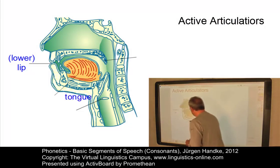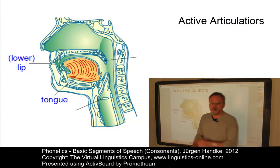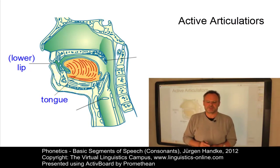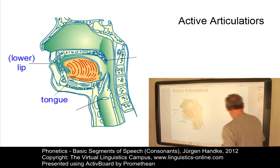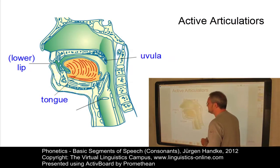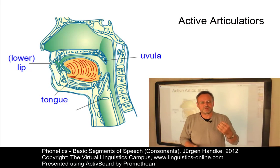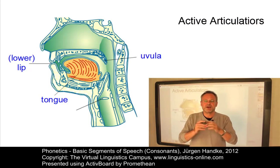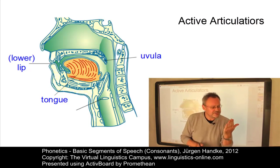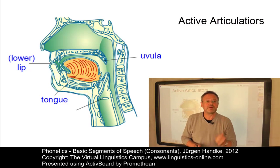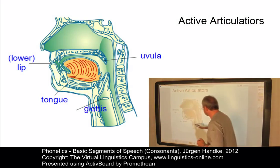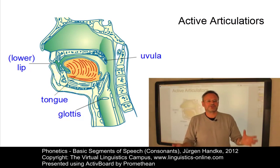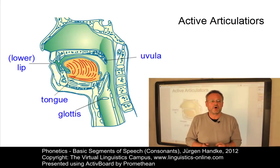Further active articulators include the tongue. Of all mobile organs, the tongue is the most versatile. It is capable of adopting more shapes than any other vocal organ and is involved in the production of all vowels and most consonants. Another active articulator is the uvula — the most noticeable feature of the velum — an appendage that hangs down and is easily visible if you open your mouth and look into a mirror. Finally, we have the glottis, which is part of the larynx and is the source of phonation.